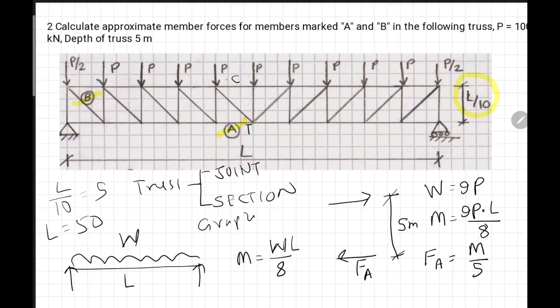Now, the second question is to find out force in member B. We will be having reaction at this point - 9P, and we have P by 2 and P by 2. So 5P is the reaction here. We will get same 5P. This will be zero member force. If I say the force in member B, F_B.